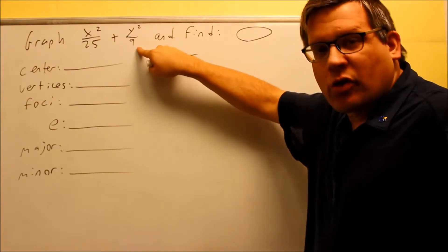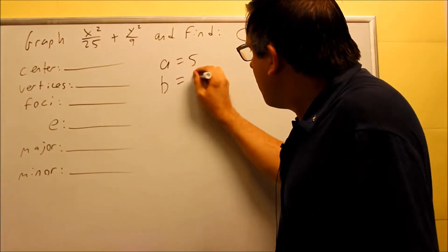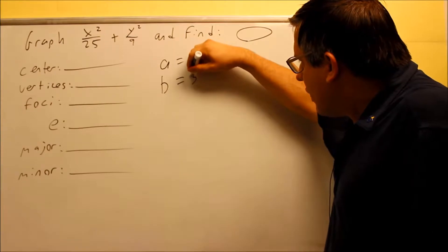Likewise, the b is the square root of the smaller number, the square root of 9 is 3. So we have this, so now we have 5 and 3.